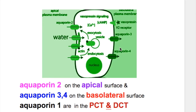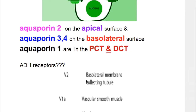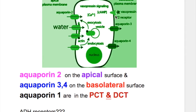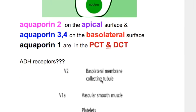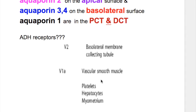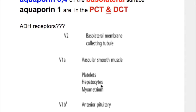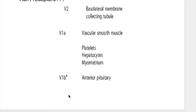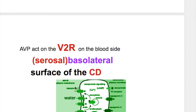Aquaporin 2 is present on the apical surface, and aquaporin 3 and 4 are present on the basolateral surface. V2 receptors are present on the basolateral surface, V1 receptors are present on vascular smooth muscles, platelets, liver cells, and myometrium, and V3 (V1B) receptors are present in the anterior pituitary.